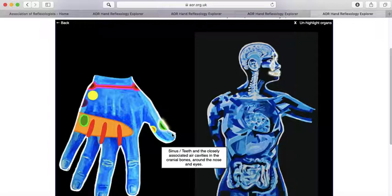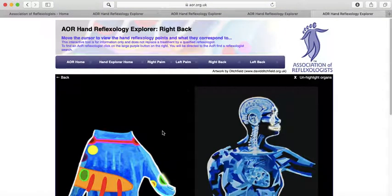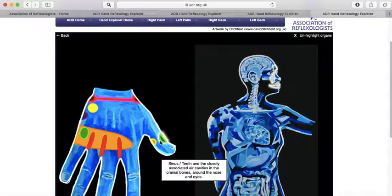You can see it shining on the picture. You can see that that's the teeth, which corresponds to this little green area below the nail of the thumb.